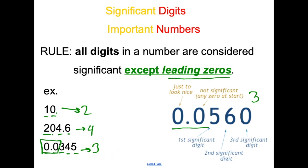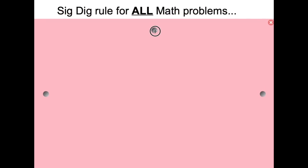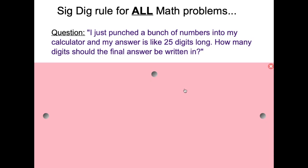Now the next question that we have is revealed here: significant digit rule for all math problems. I guess this isn't a question, but here's a question. So I just punched a bunch of numbers into my calculator and my answer is like 25 digits long. How many digits should the final answer be written in? Which is basically how all my students sound to me.